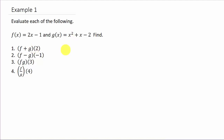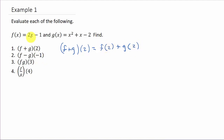I want to find f plus g of 2. Remember, this is f of 2 plus g of 2 — that's all that means. So f of 2: we take the 2 and plug it in for x in f. That's going to be 2 times 2 minus 1, plus g of 2. I'm going to take the 2 and plug it in for x in g. So that's plus 2 squared, plus 2, minus 2.